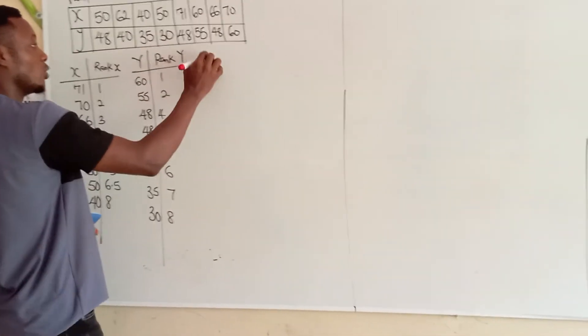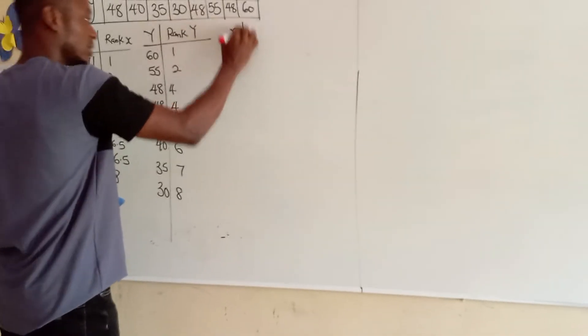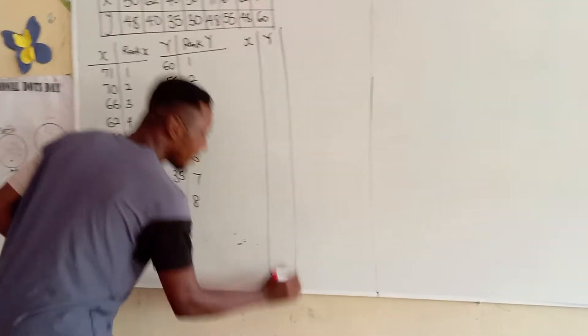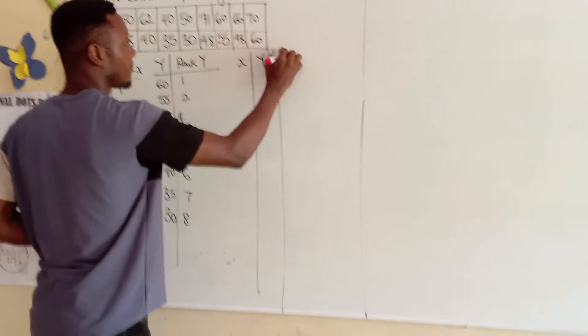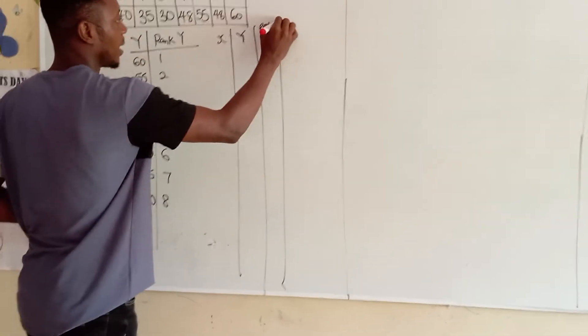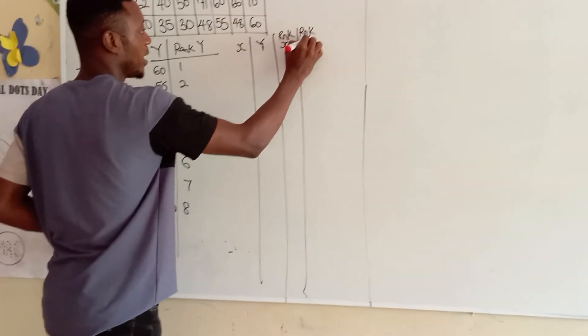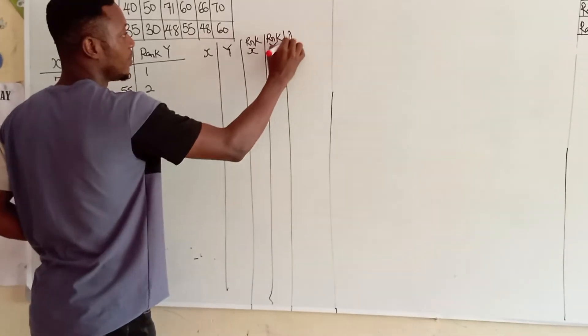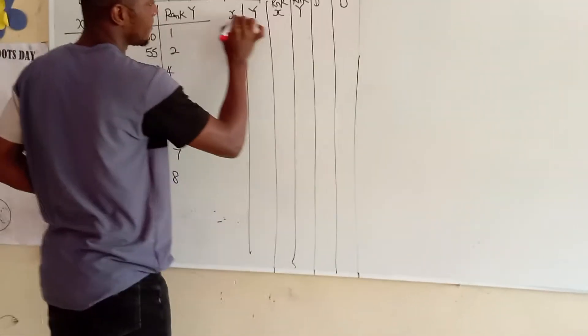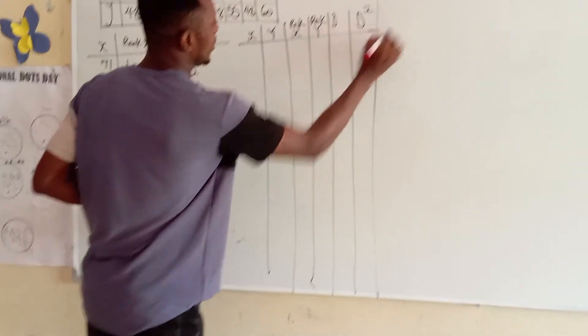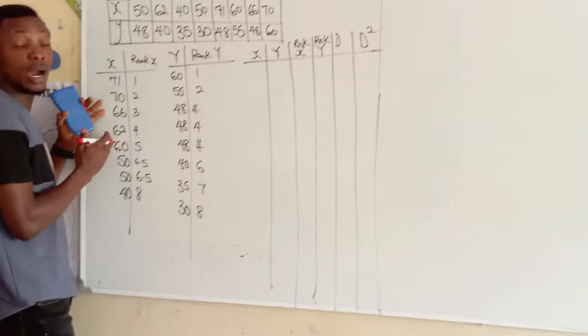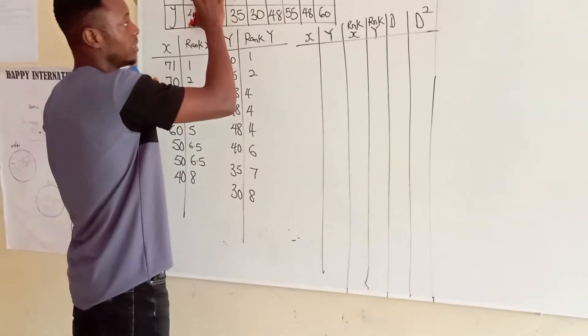Then, I'm going to pair the two of them together. I will draw a table. We have X. I have Y. I have rank X. We have rank Y. I have D. Then, I have D squared.